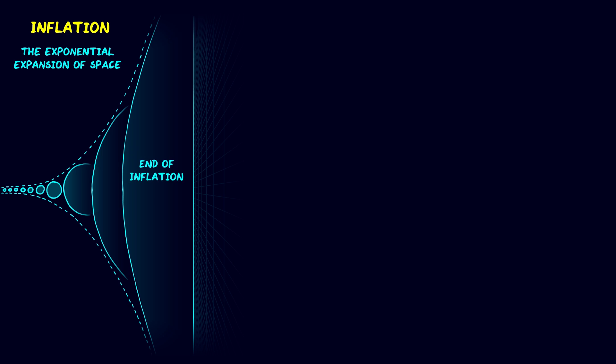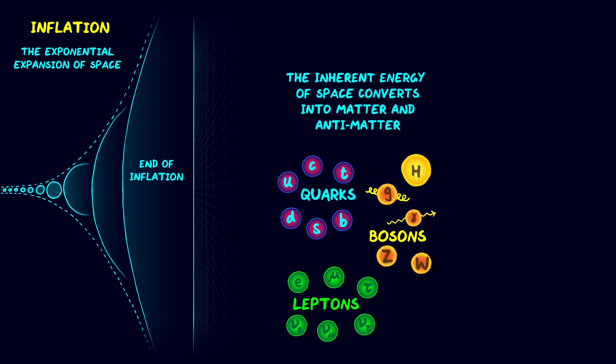And then there was an end to inflation. The energy inherent to space was turned into stuff: matter, antimatter, particles and radiation. This is known as the Hot Big Bang, and this is where all the matter in the universe came from.